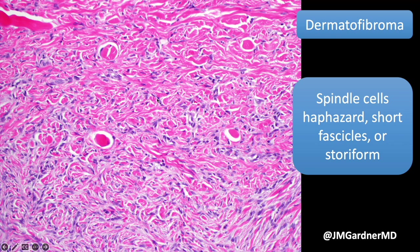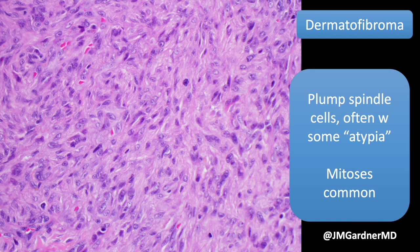The spindle cells are often haphazard, interspersed between collagen bundles almost making little tiny cords or chains. They can form short fascicles and can even be storiform in configuration. Storiform pattern is a buzzword for DFSP, but I've seen many totally benign dermatofibromas with storiform patterns, so not all that is storiform is DFSP. Here's another DF with a more sheet-like arrangement of very plump spindle cells.